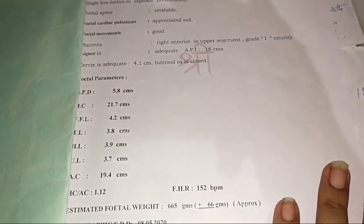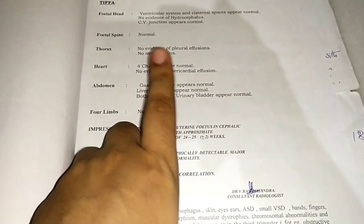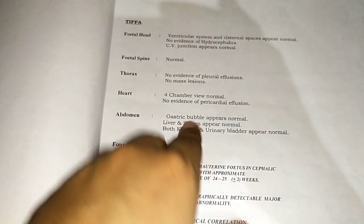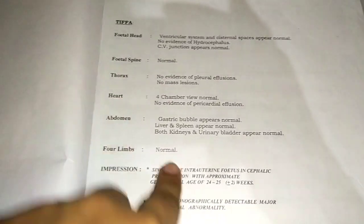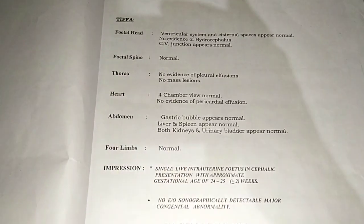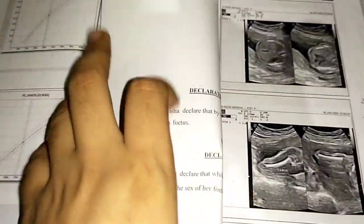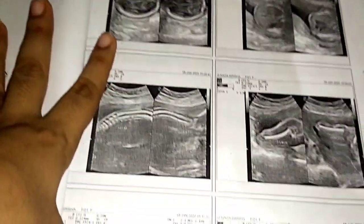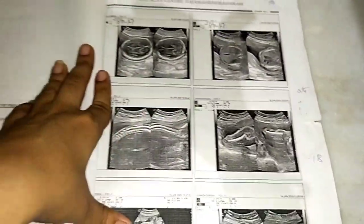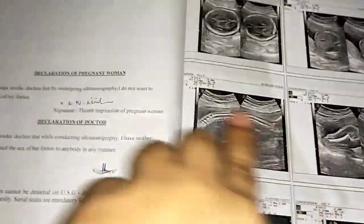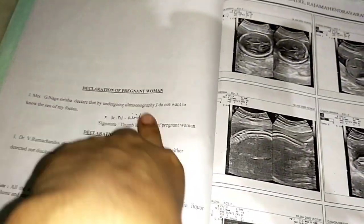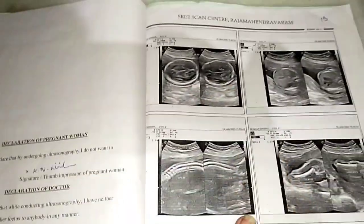Have a 6th month tip pass. I think the TIFFA Scan is going to be normal to see the baby parts, or the baby parts are normal. I will show you some pictures — how many weeks and days. I will show you the TIFFA Scan. I will show you the sign in the next month.